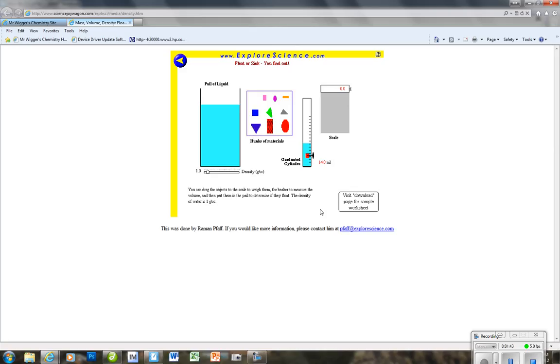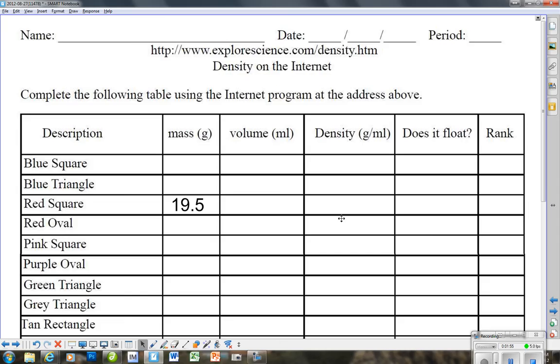The amount that it goes up is a total of 14 milliliters. That's the difference between the starting level which was down about here and the level that it's at right now. So that 14.0 milliliters is going in the volume column.